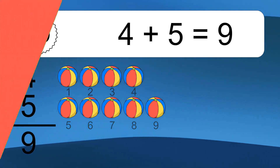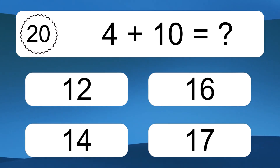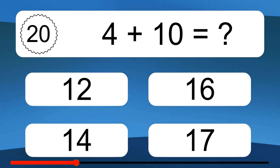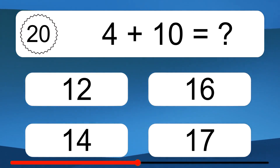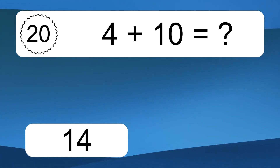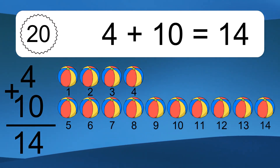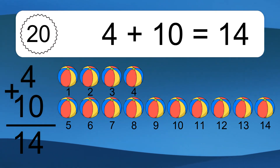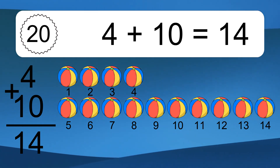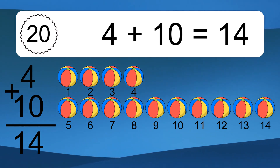4 plus 10 equals what? 4 plus 10 equals 14. Let's count it: 1, 2, 3, 4, 5, 6, 7, 8, 9, 10, 11, 12, 13, 14.